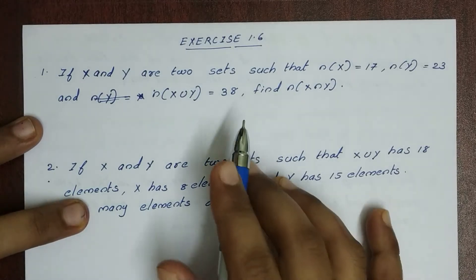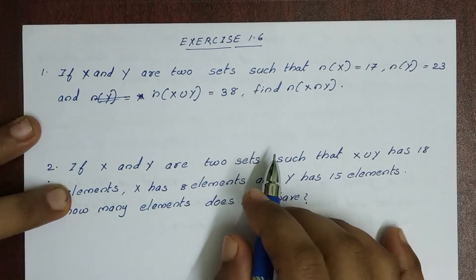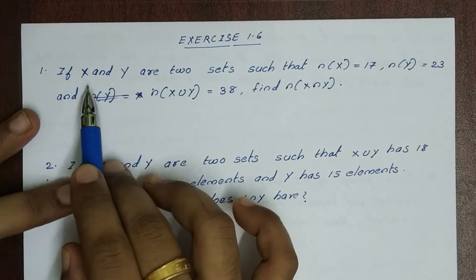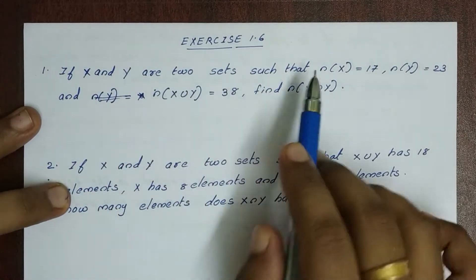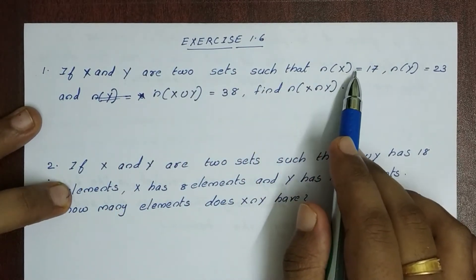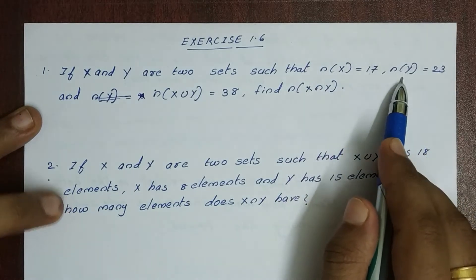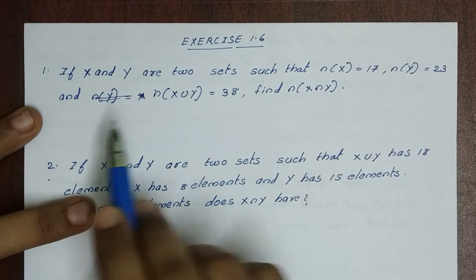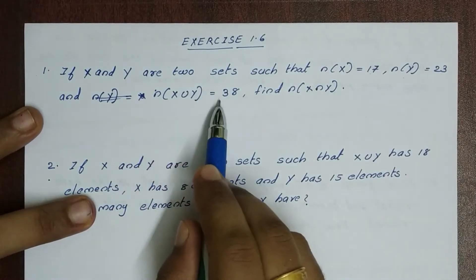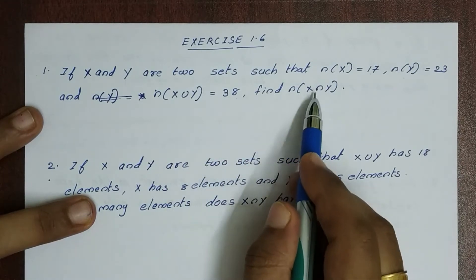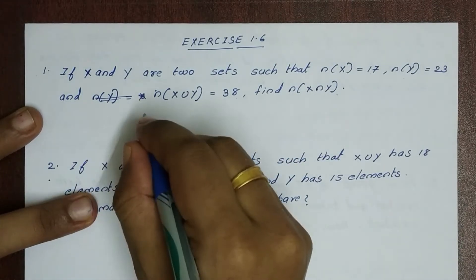Hi! Today is 1.6 problem. First question: if X and Y are two sets such that the number of elements in X is equal to 7, the number of elements in Y is equal to 23, and the number of elements in X union Y is equal to 38, find the number of elements in X intersection Y.